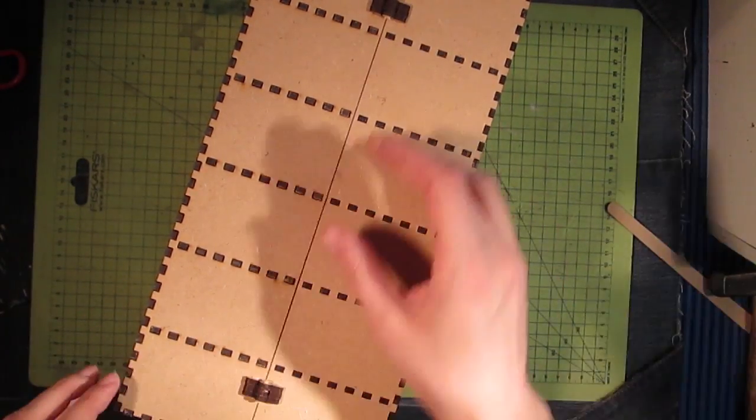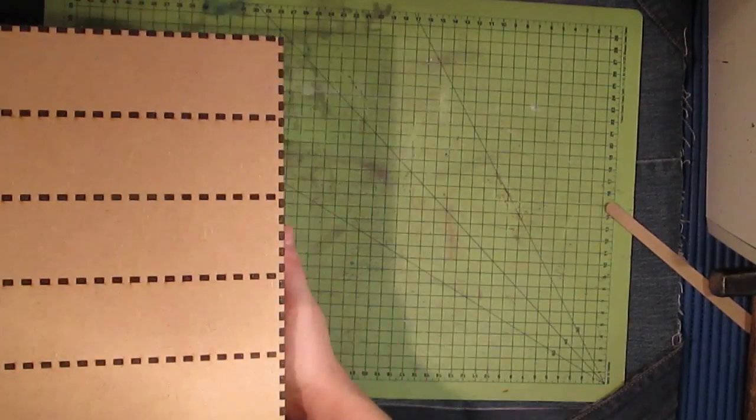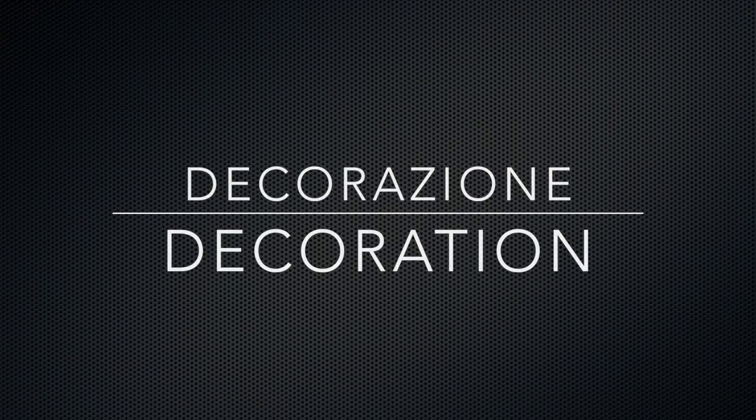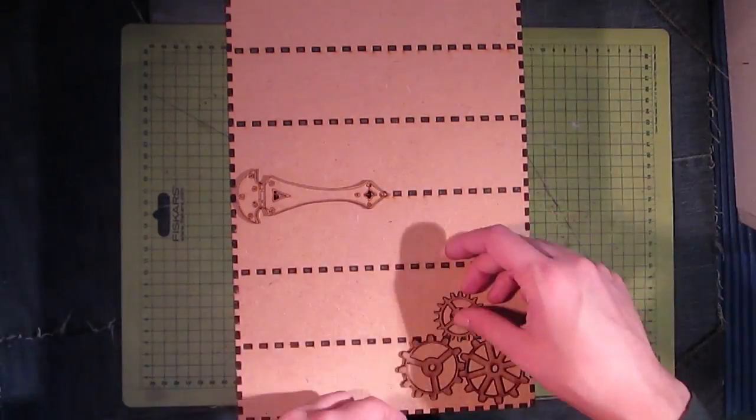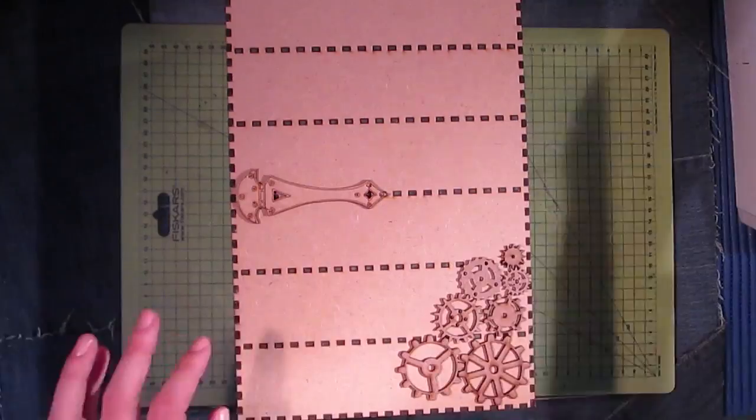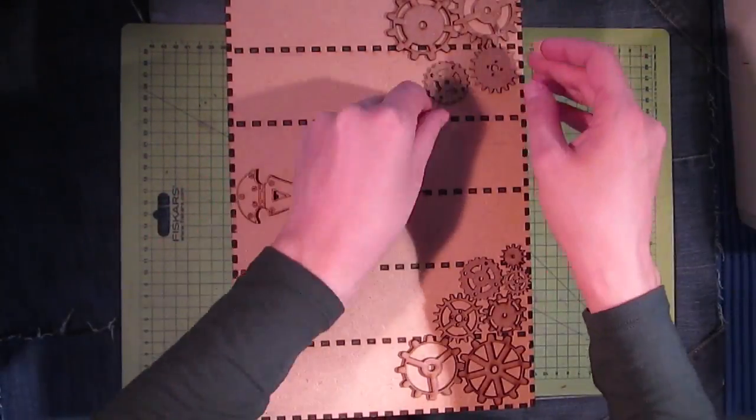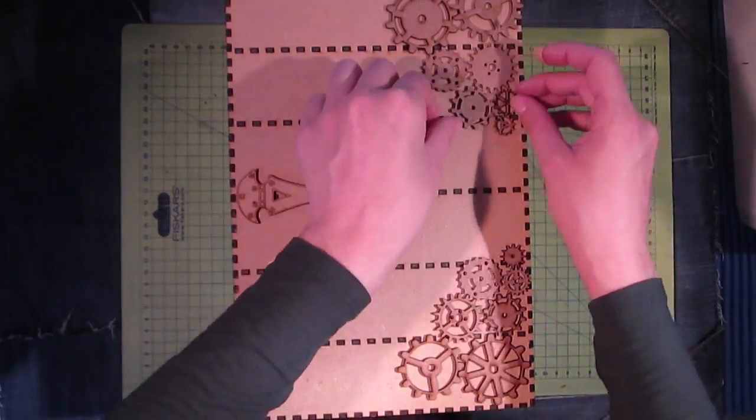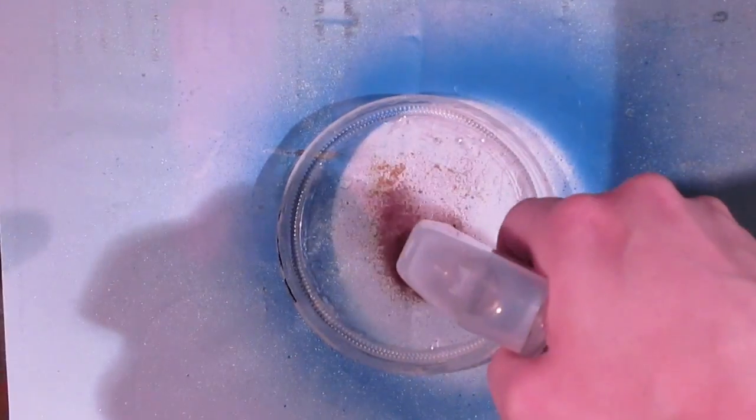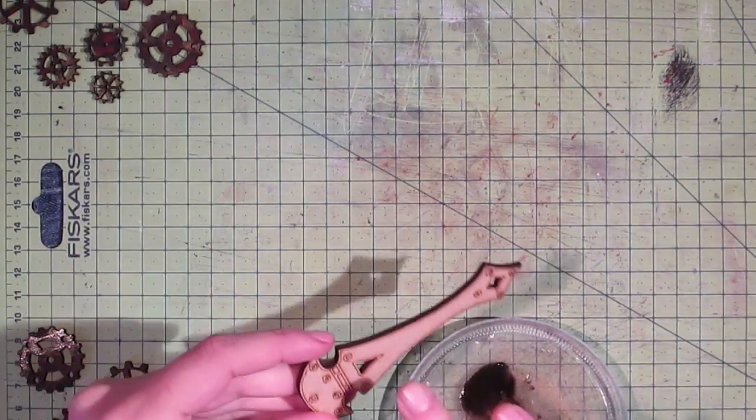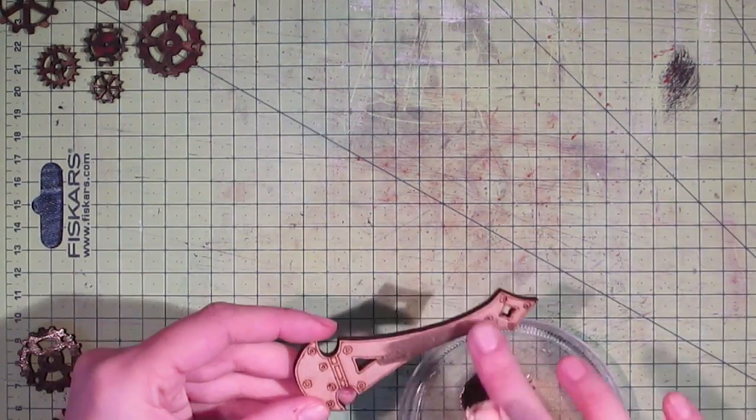And now we're ready to decorate it. I decided to use this medieval hinge and also these cogs and gears by Fernly Designs. I'm taking my Prima Marketing Color Bloom Antic Gold and I spray it on a plastic lid and I paint my hinge just with the fingers.